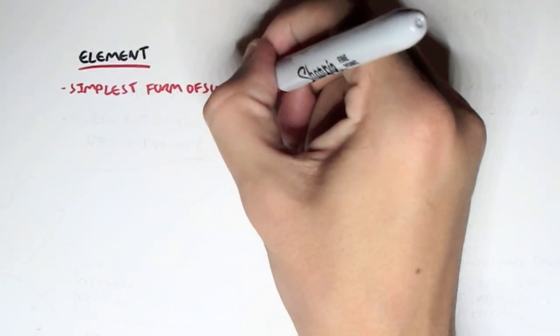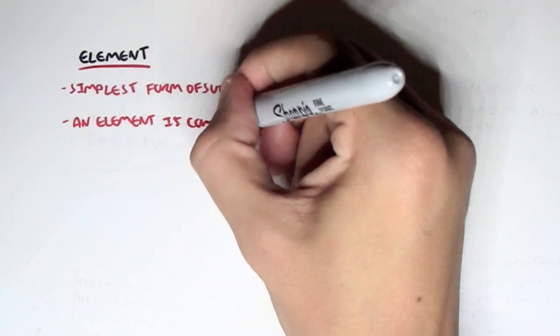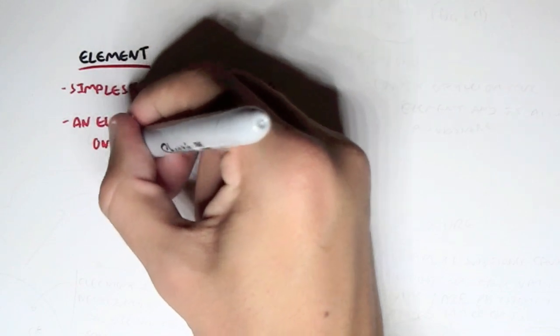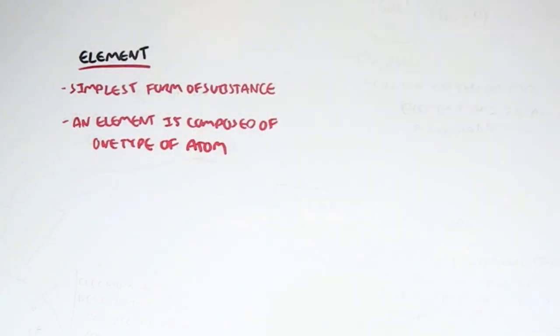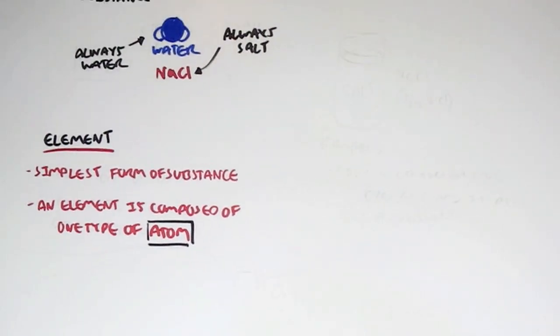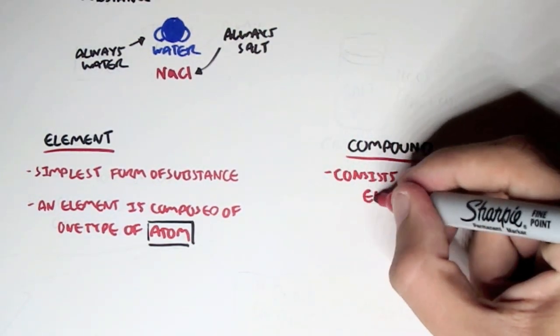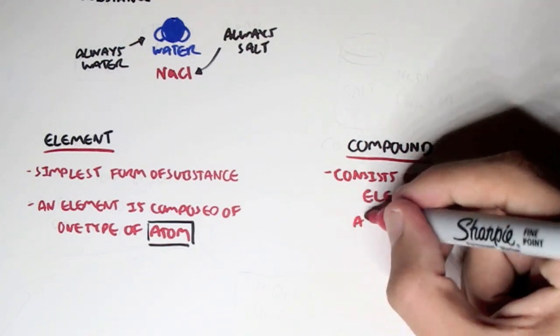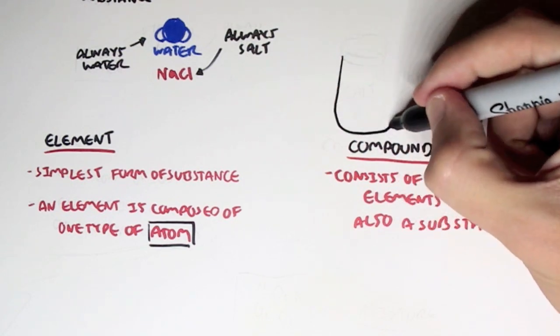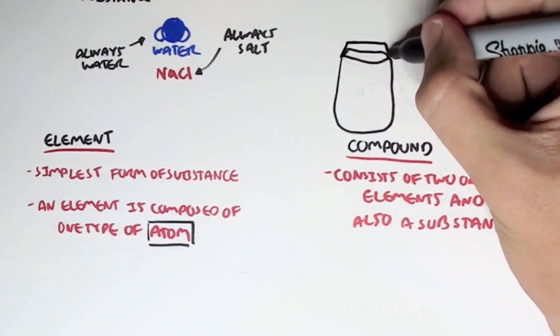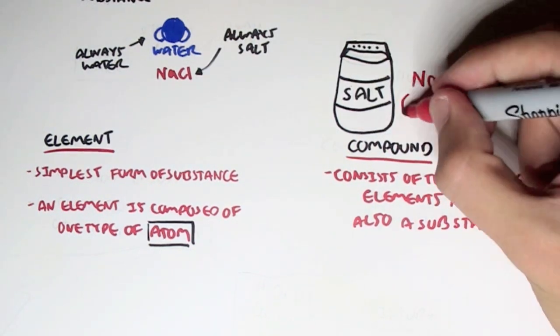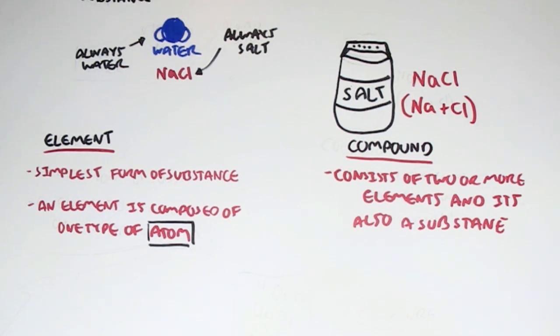So for example, water is a substance but water consists of hydrogen and oxygen. So hydrogen and oxygen are the simplest form of a substance. An element is also composed of one type of atom. Next is compound. Now, compound consists of two or more elements and it's also actually a substance. Salt is made out of sodium and chloride, sodium chloride. And so this is a compound because it's made out of two elements, sodium and chloride.